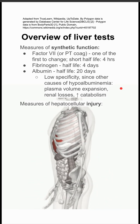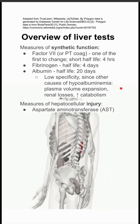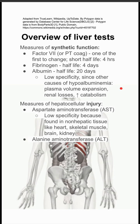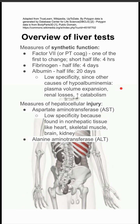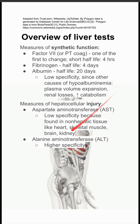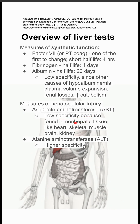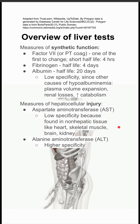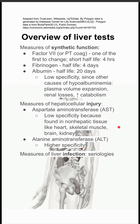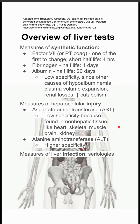The next list is for hepatocellular injury. You can use the AST and the ALT here. ALT is more specific, and the AST is less specific because it's found in non-hepatic tissues, like the heart, skeletal muscle, brain, and kidney.